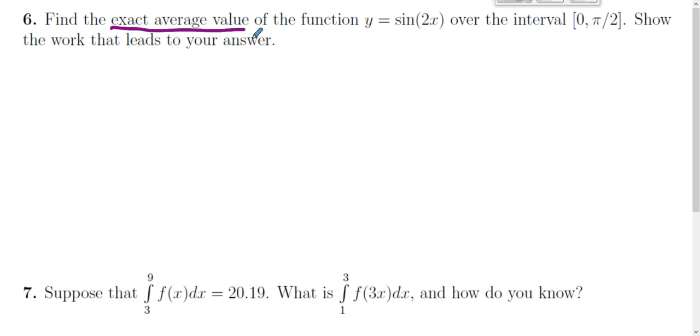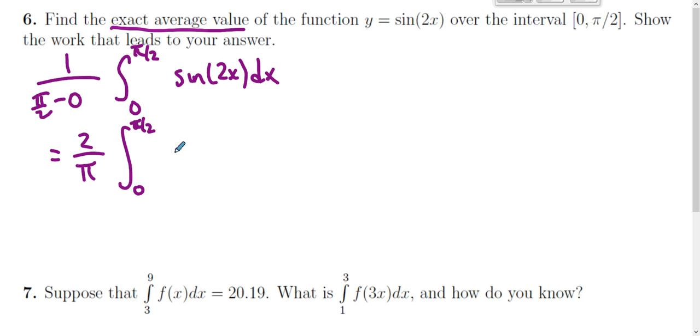So, whenever we find an average value of a function, we take an integral of the function and divide it by the length of the interval. That's how we find the average value of a function. We take the integral and divide by the length of the interval. So, this fraction happens to be 2 over pi, and we're going from 0 to pi over 2, sine of 2x dx.